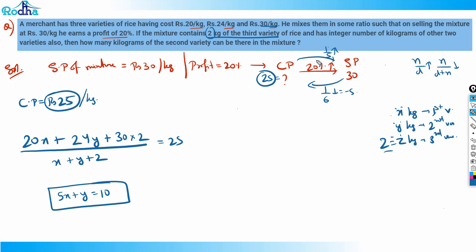The question says the other two varieties have integers in kilograms. How many kilograms of the second variety can be there in the mixture? The options were 1, 5, 3, 6. They're asking for y value. Among the options, y equal to 5 will work. If y is 5, then x will be 1. So only y equals 5 makes both integers.